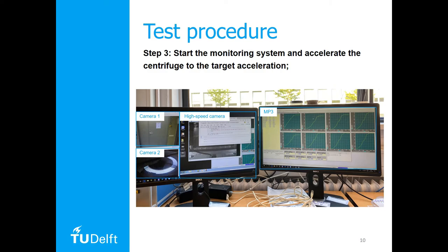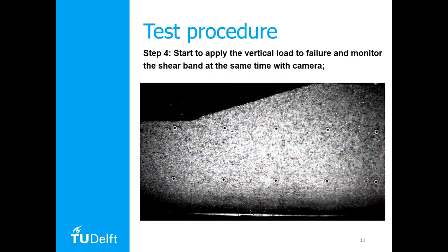The MPS3 software can be used to increase the angular velocity of the centrifuge to the target value and to control the actuator. Besides that, the software is also used to log data as a function of time and can be used to visualize the data during the experiment itself. The data logged during the test include vertical displacement of the foundation, the vertical load force, and angular velocity of the centrifuge. After reaching the target angular velocity, we can start performing the test by displacing the foundation downwards. However, first we have to make sure that the camera starts capturing images at the right frequency.